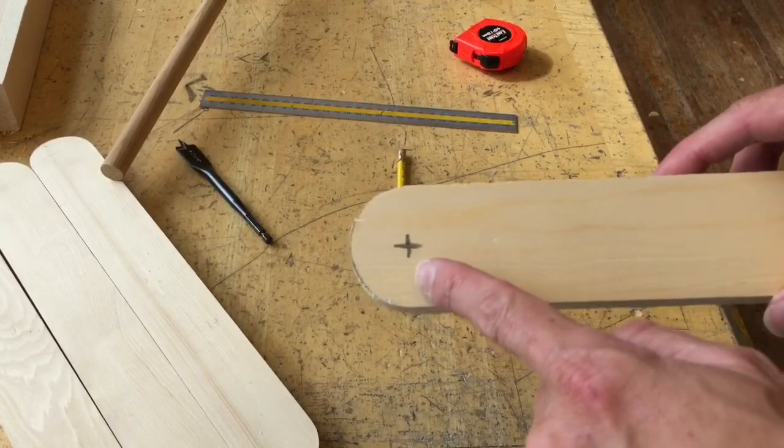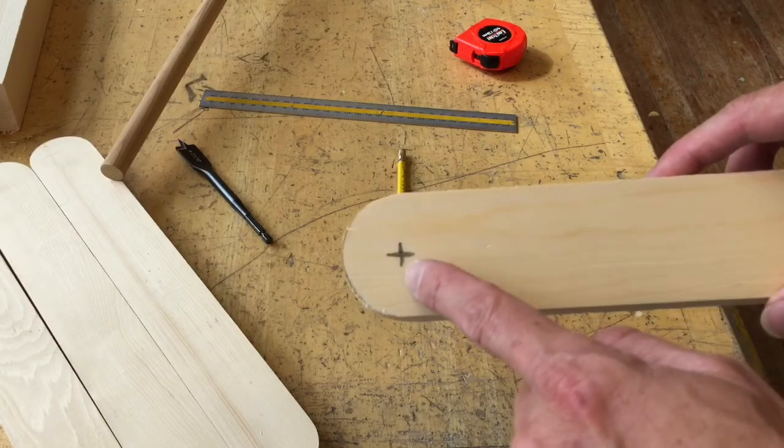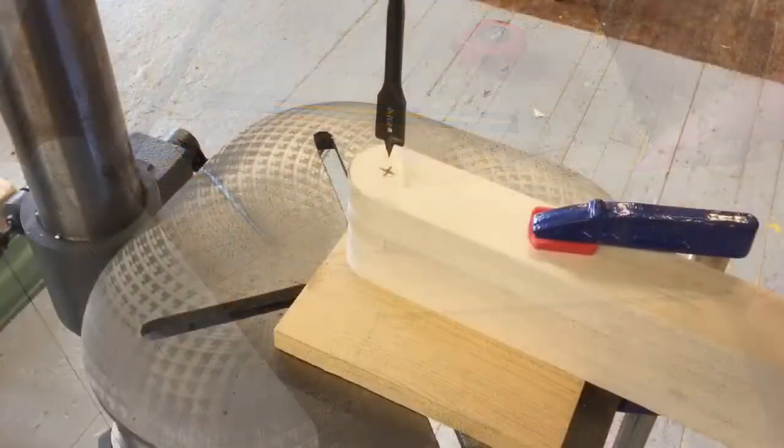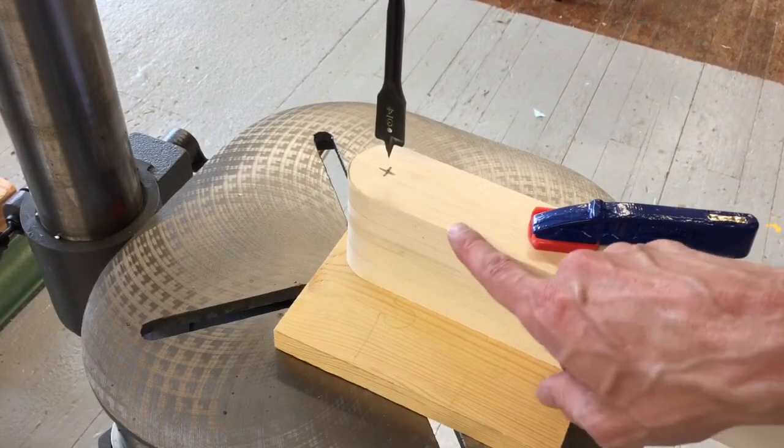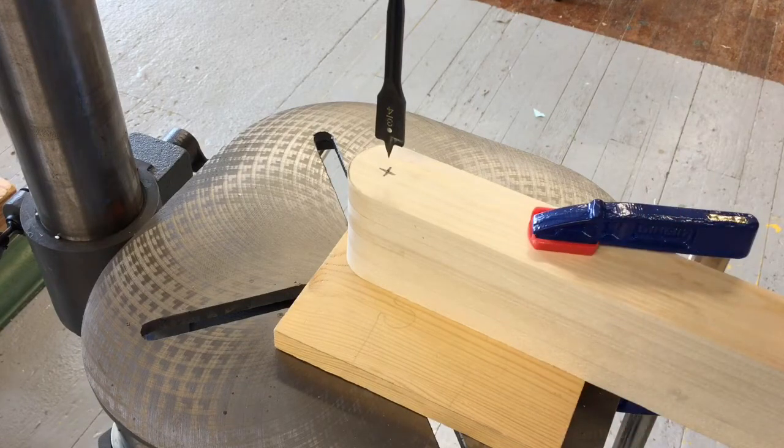So there's our X, and we've made sure this is the same distance from here, same distance from here, and the same distance this way. With all of our pieces clamped down to the drill press, we're going to drill through four pieces at a time so we get a nice straight hole.